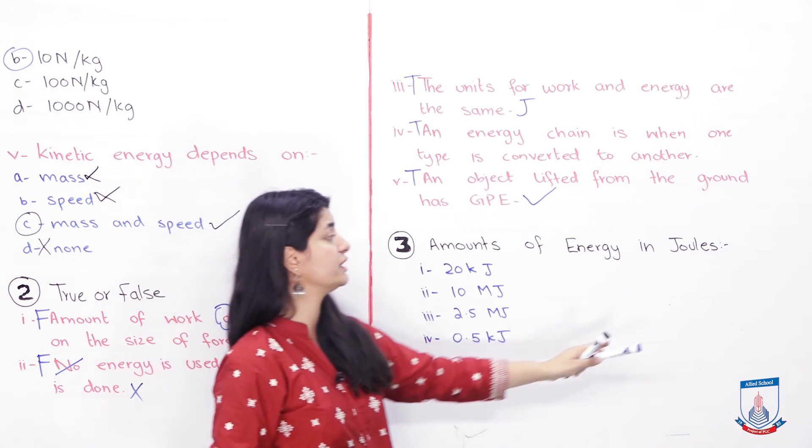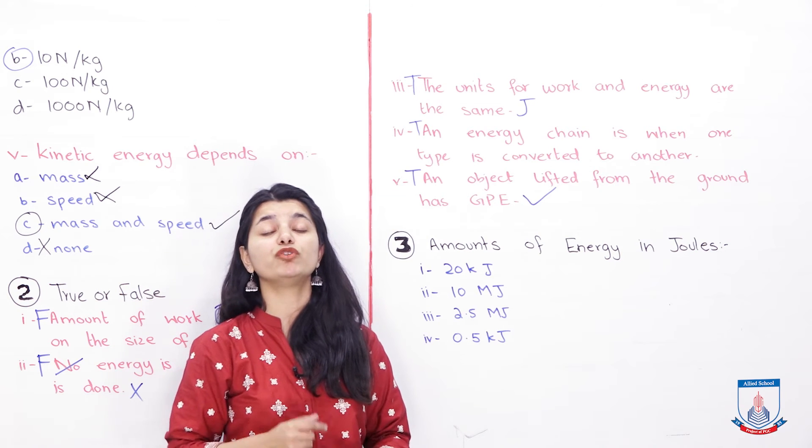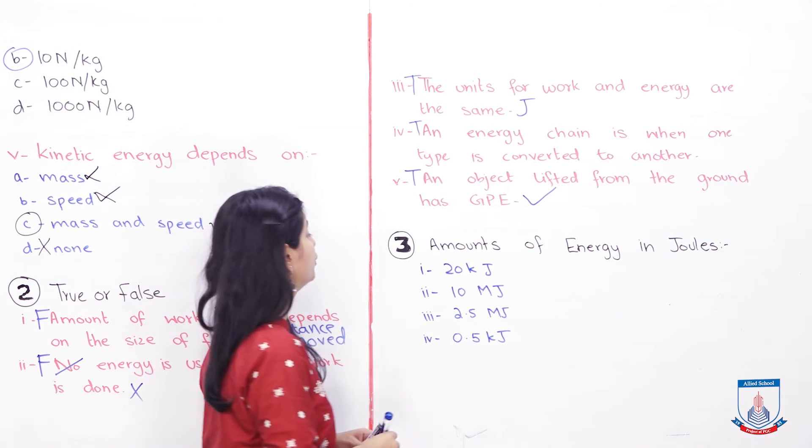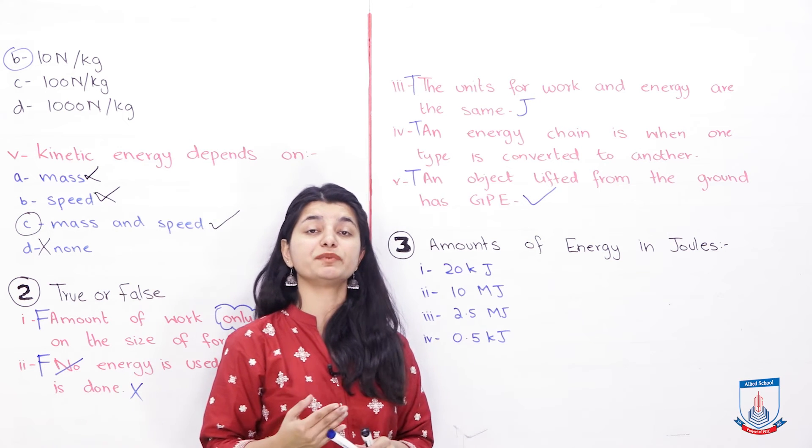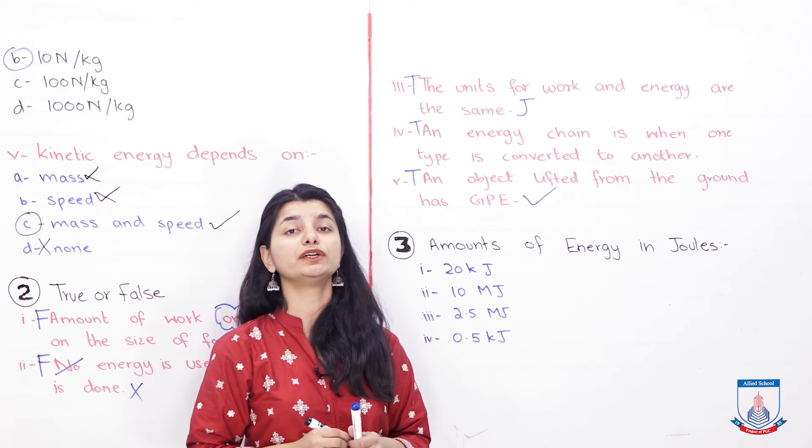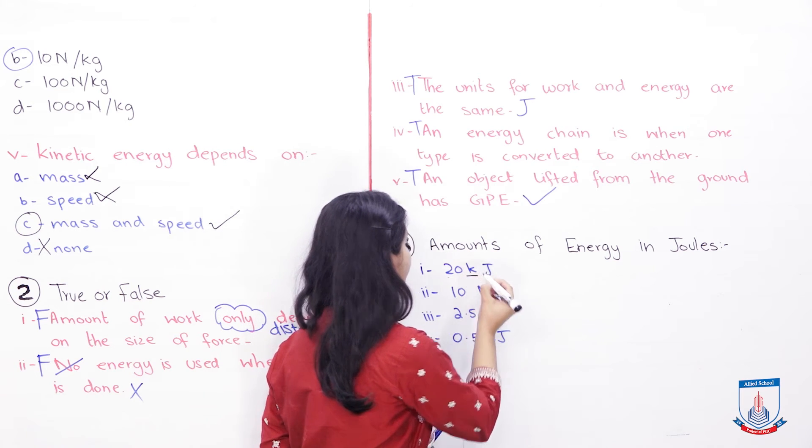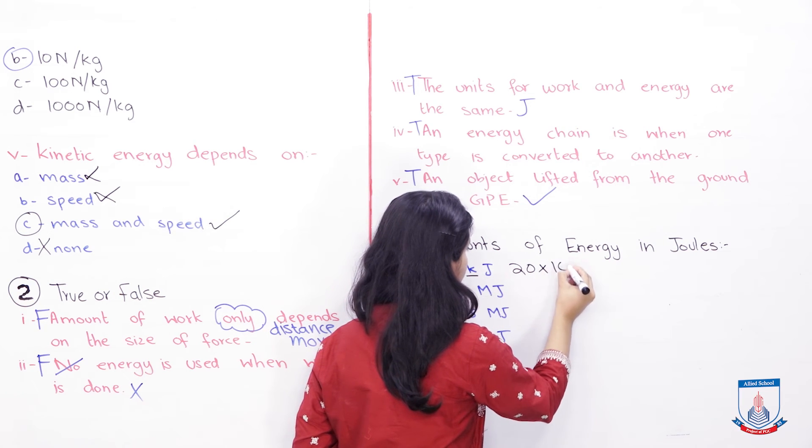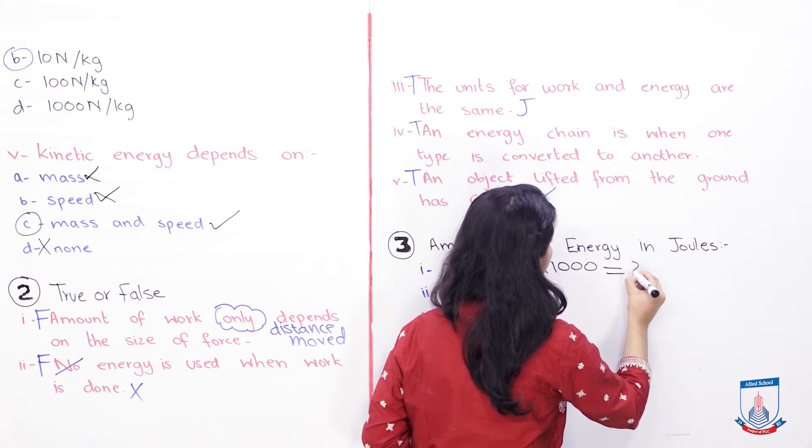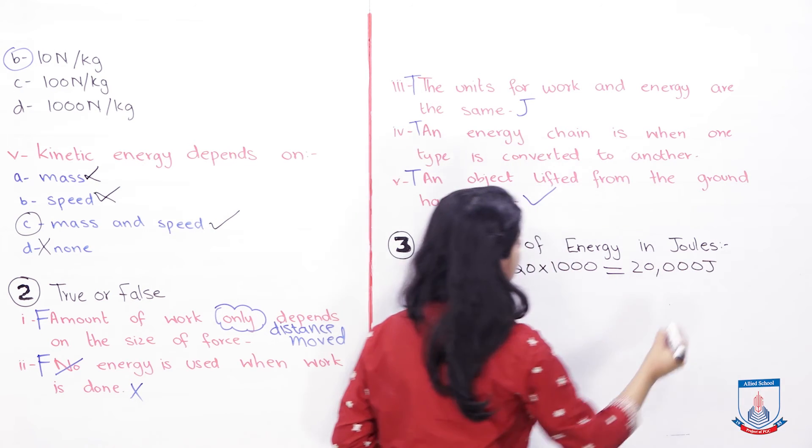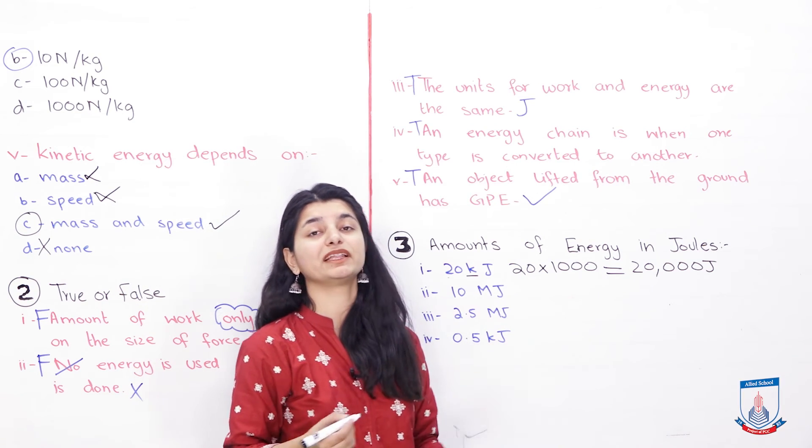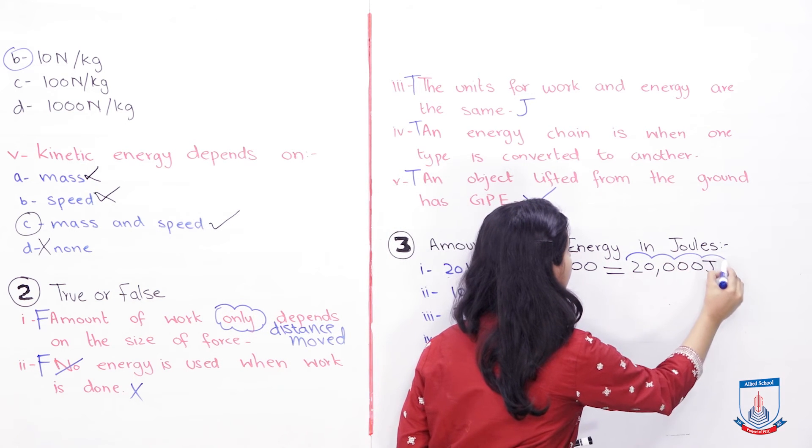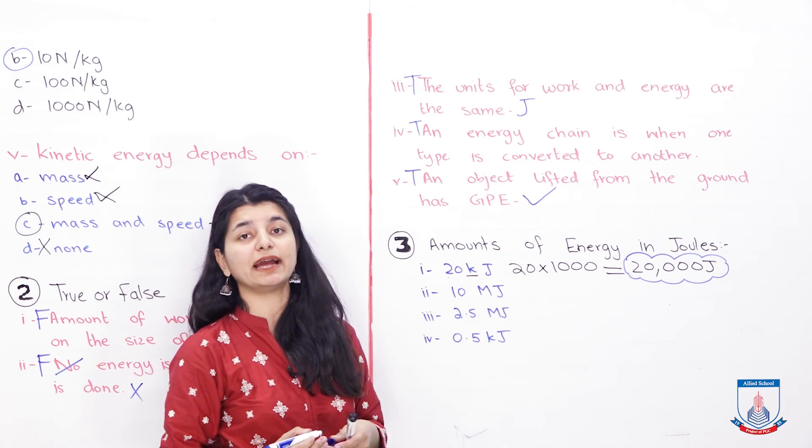There are amounts of energy in joules. How can we do that? It is not difficult at all. Now identify what is the meaning of kilo. Kilo means thousand. So if you multiply 20 by 1000, you will get your answer: 20,000 joules. So just by multiplying it by 1000, we know that in joules, if you want to convert this amount, you will get your answer. You can easily identify it.